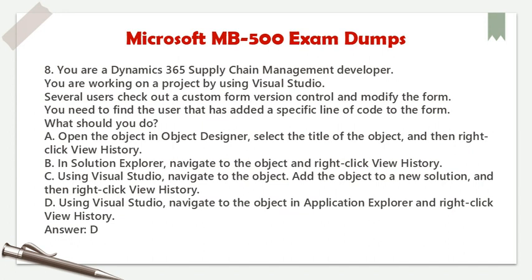Question 8. You are a Dynamics 365 Supply Chain Management developer. You are working on a project by using Visual Studio. Several users check out a custom form in version control and modify the form. You need to find the user that has added a specific line of code to the form. What should you do? A. Open the object in Object Designer, select the title of the object, and then right-click View History. B. In Solution Explorer, navigate to the object and right-click View History. C. Using Visual Studio, navigate to the object, add the object to a new solution, and then right-click View History. D. Using Visual Studio, navigate to the object in Application Explorer and right-click View History. Answer: D.